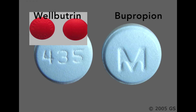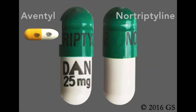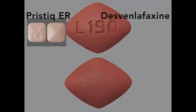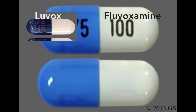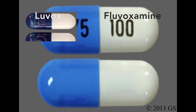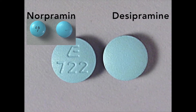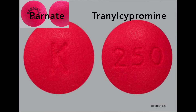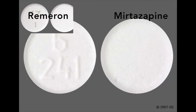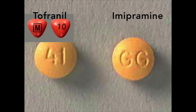The remaining medications are not as commonly known, but they're prescribed for depression and other things: Wellbutrin and bupropion, Aventyl, nortriptyline. Also Pristiq and desvenlafaxine, which are SNRIs that treat depression. Luvox and fluvoxamine are antidepressants mainly prescribed for OCD. Norpramin and desipramine. Parnate and tranylcypromine are monoamine oxidase inhibitors, also known as MAOIs, used to treat depression. Remeron and mirtazapine. And lastly, Tofranil and imipramine.